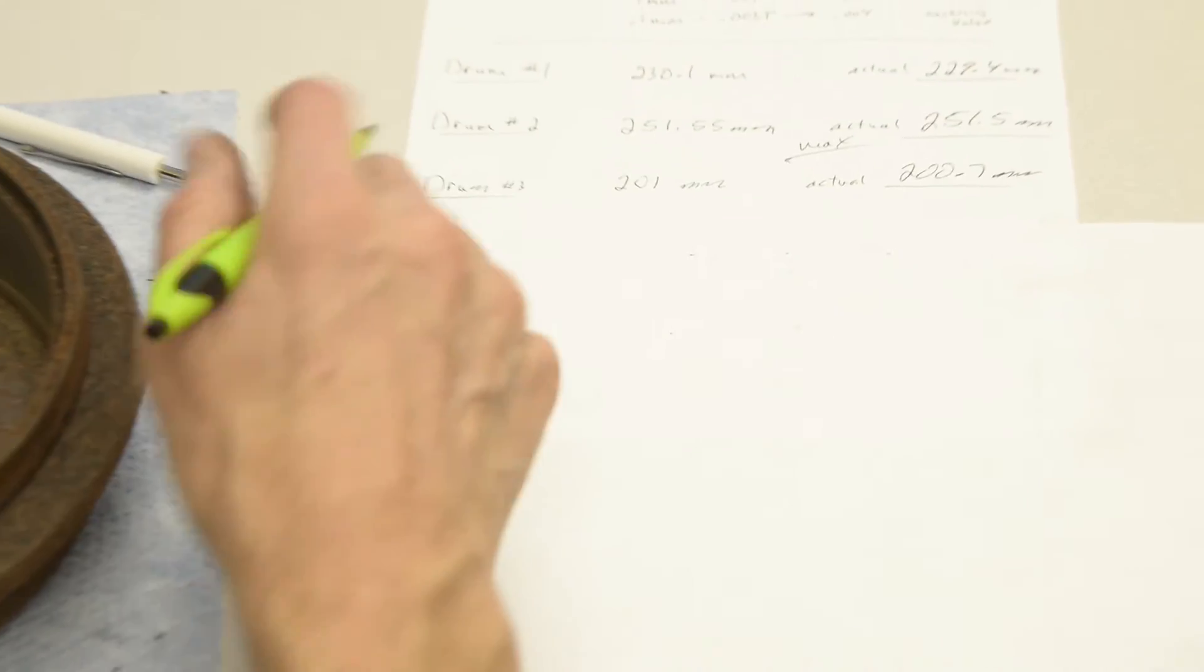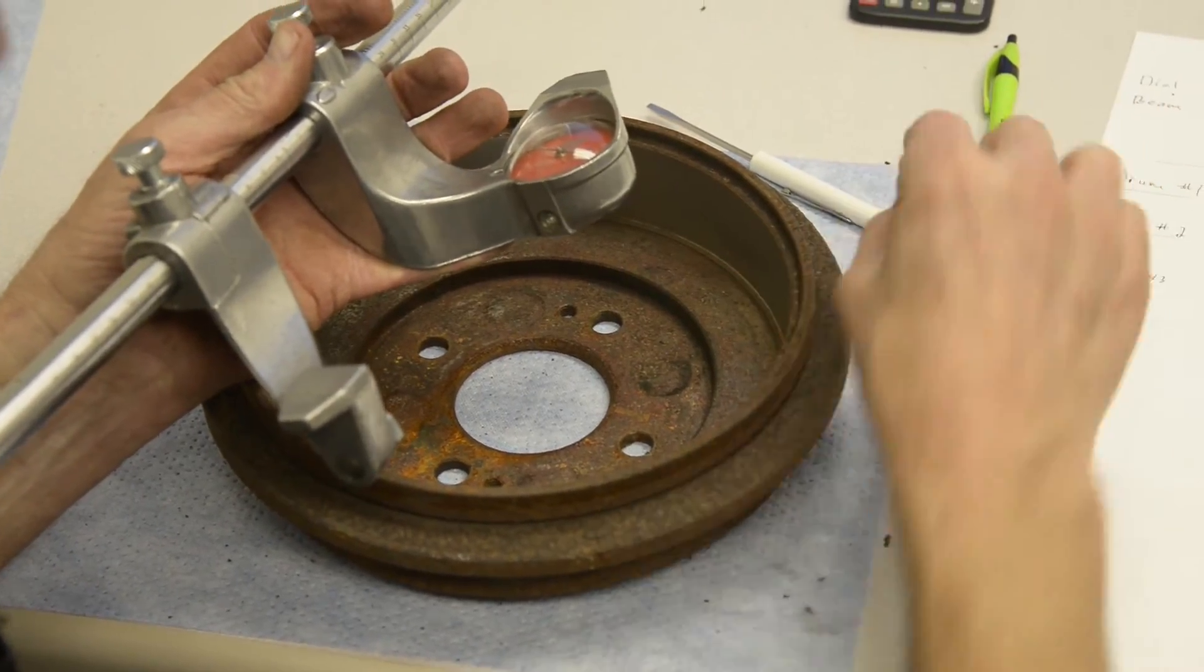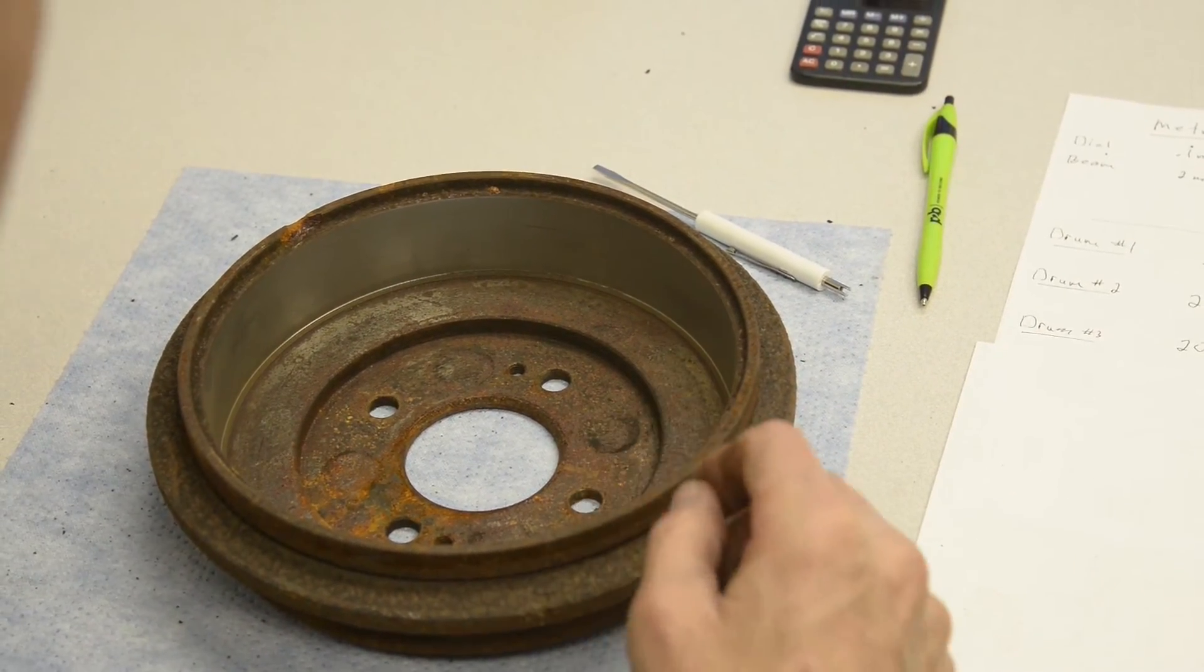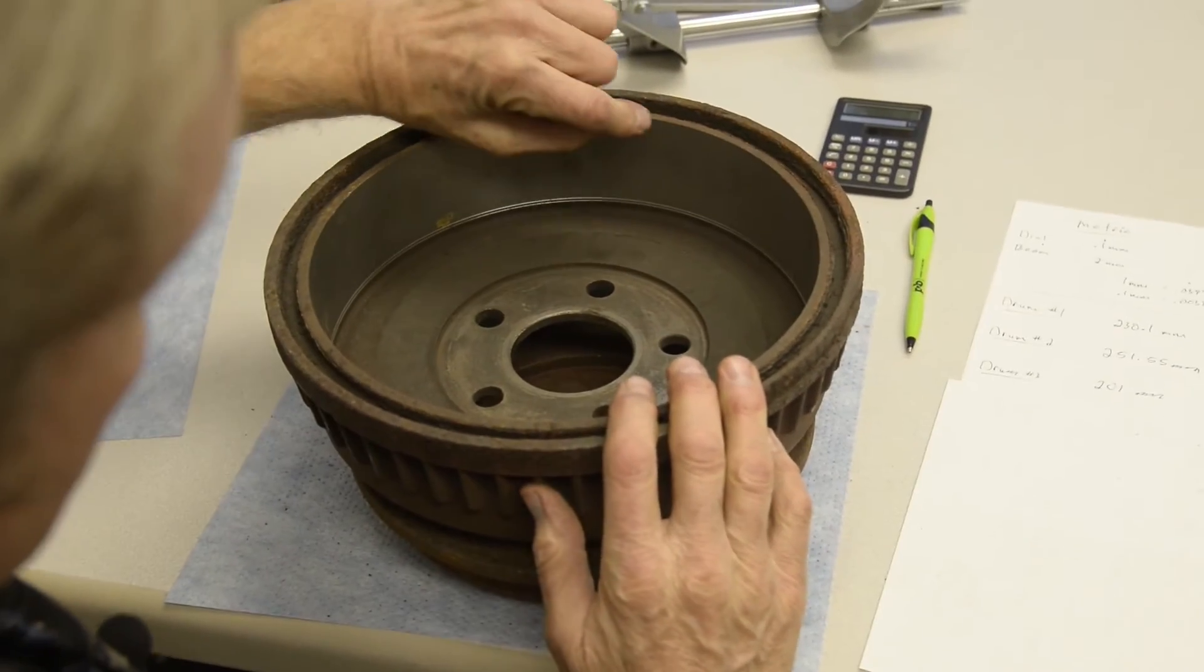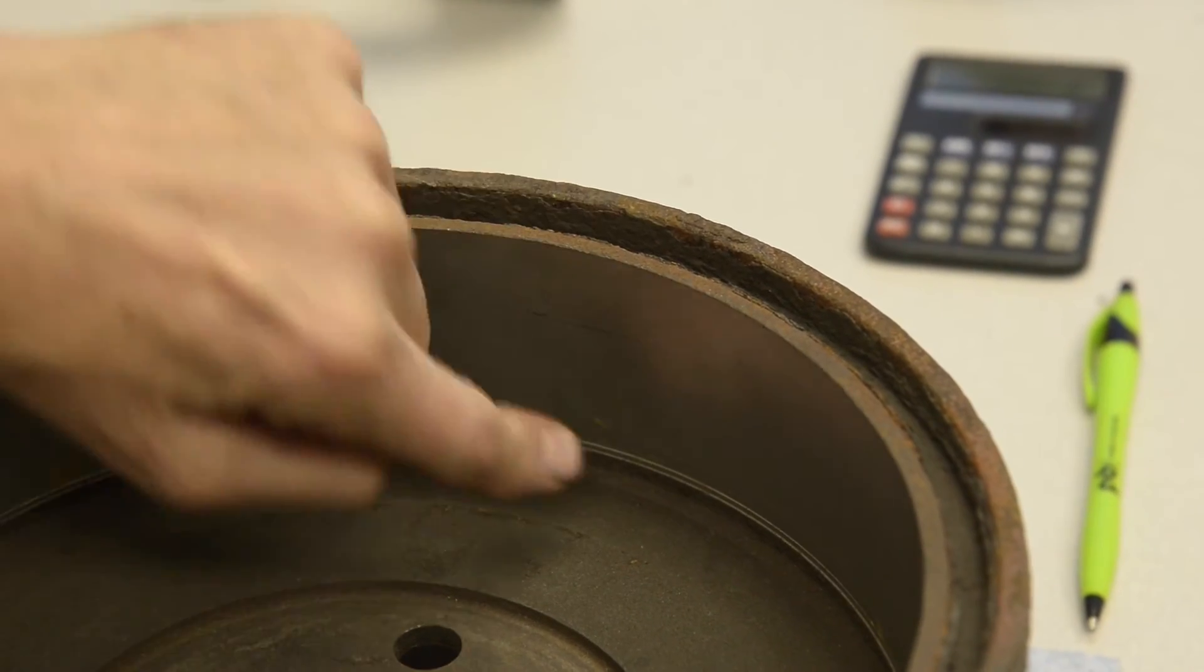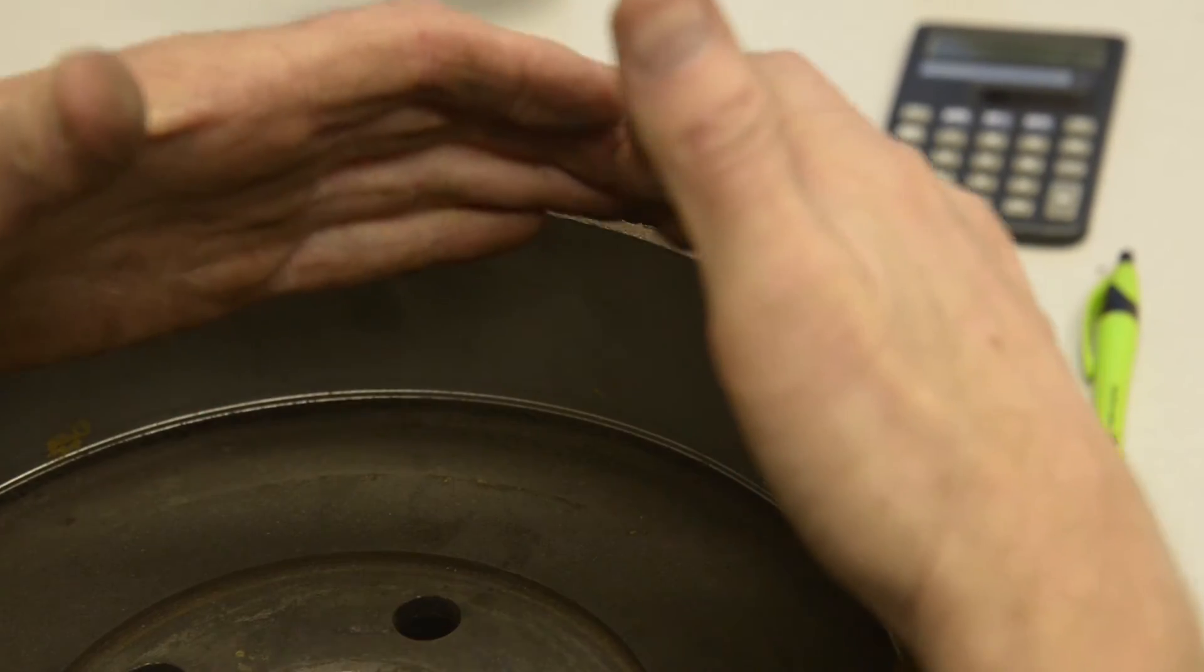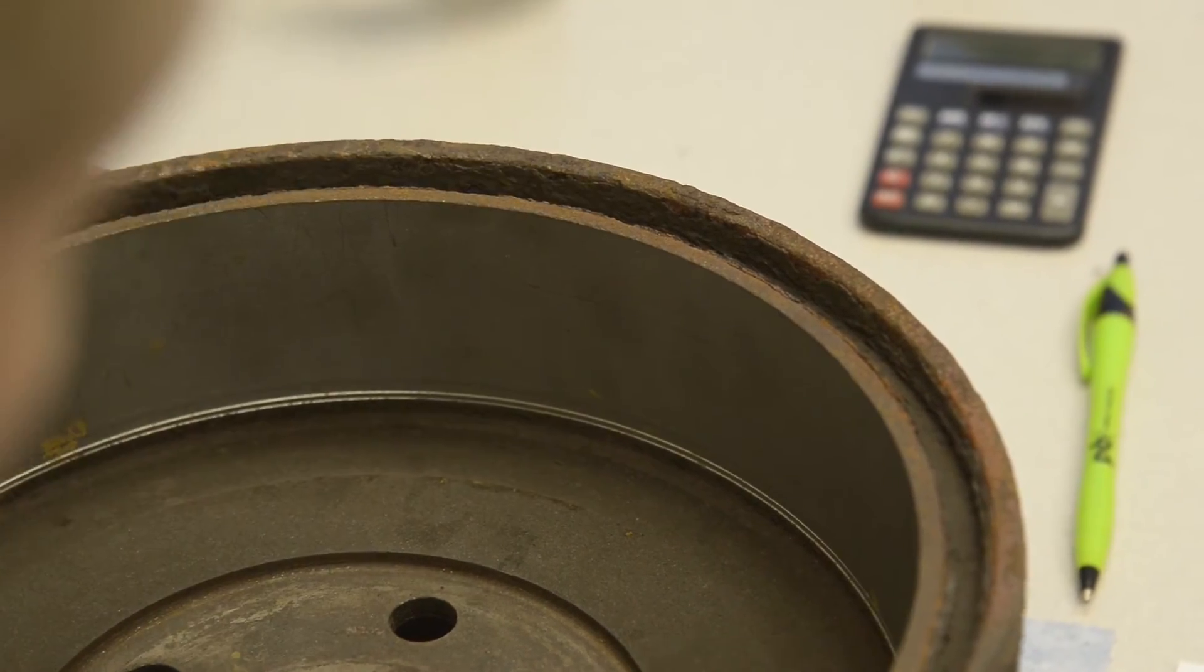I want to point one thing out. This drum right here, it's been machined a few times, and if you look closely here there's a sharp corner. What we call the bevel has been machined out. The drum's worn, it's been machined, and they made the diameter of the drum big enough that it took out what we call a bevel. I'll show you what I mean by a bevel.